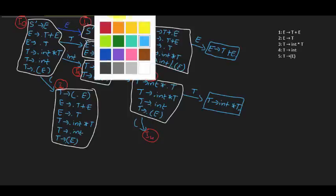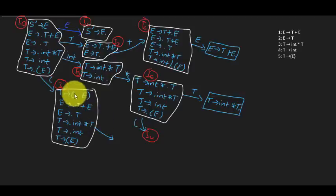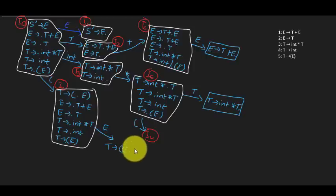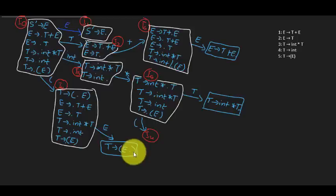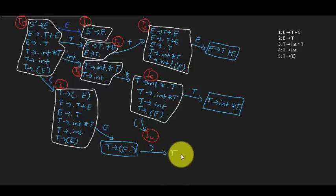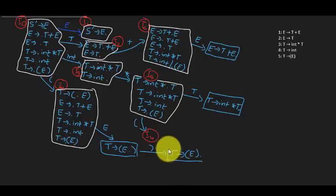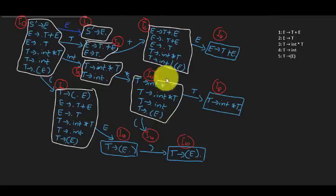When we move the dot after E, we get T → (E•. Since the dot is before a terminal, no closure is needed. Then moving the dot after closing parenthesis gives T → (E)•, which is the accepting state for that rule. Let's now number all the states.